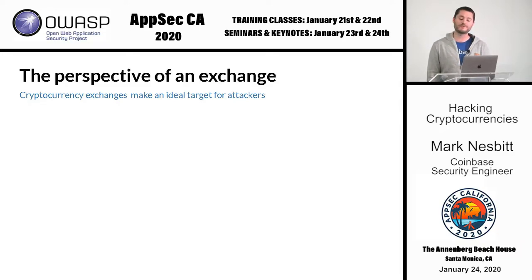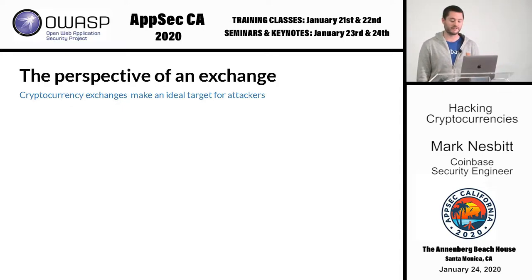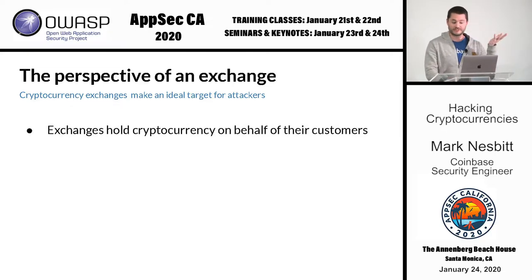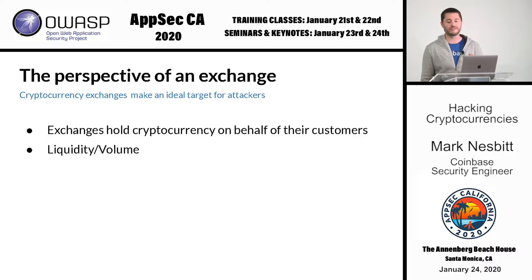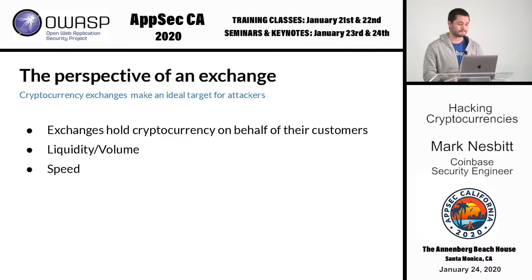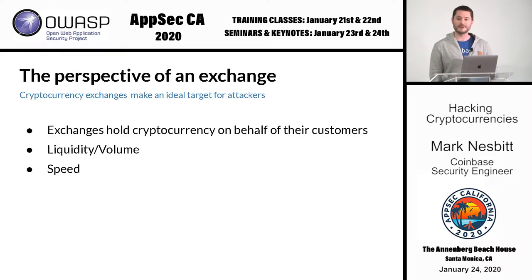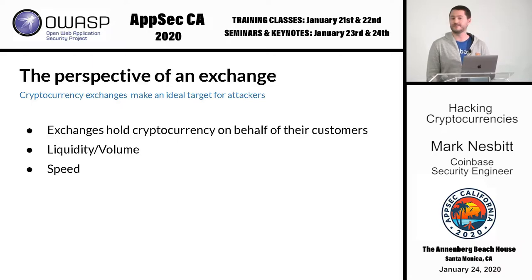I work for Coinbase, a major cryptocurrency exchange. Exchanges make an ideal target for all kinds of attacks, including and especially 51% attacks. Exchanges hold a lot of cryptocurrency on behalf of their customers — that's an obvious enough reason for them to be good targets. But beyond simply being where the money is, there are other attractive factors for an attacker: liquidity and volume. Most cryptocurrency exchanges allow trading between different types of cryptocurrency, and being able to trade one currency into another can be very advantageous. Speed: exchanges often credit funds to customers on a relatively short timeframe and allow for nearly instant sends, so an attack can happen very quickly.